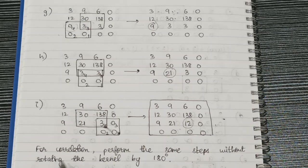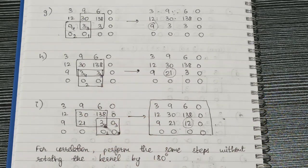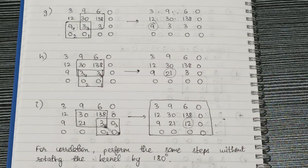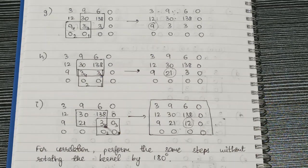For correlation, we perform the same steps but do NOT rotate the kernel by 180 degrees. We use the original kernel [1,2,3,4] from the question. You can work through this on your own using the same sliding process. That's it for this lecture; see you in the next one.